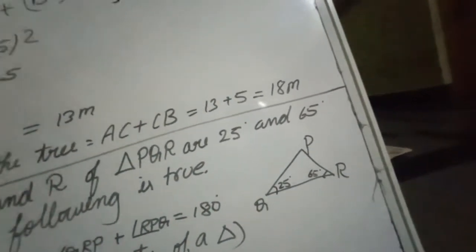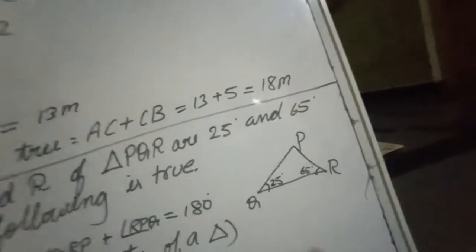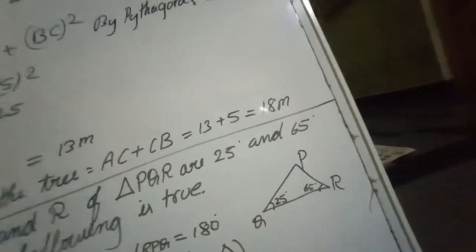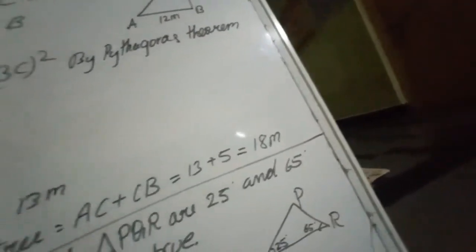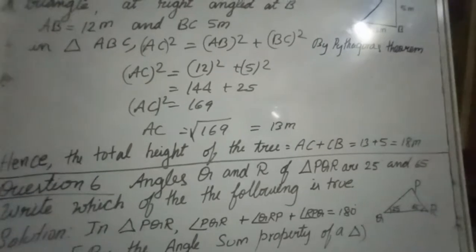But we can find out P even orally also. How? Because angle sum property is 180 degree. If these two are 90 degree means remaining obviously 90 degree. But we have to put it in the form of steps, step by step.